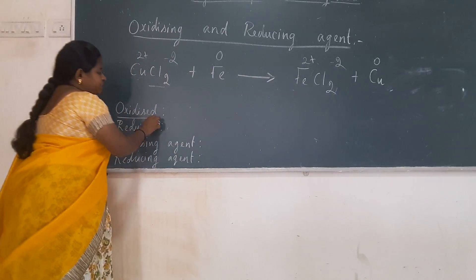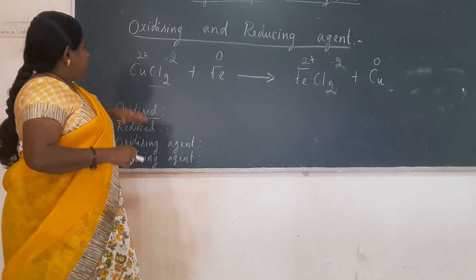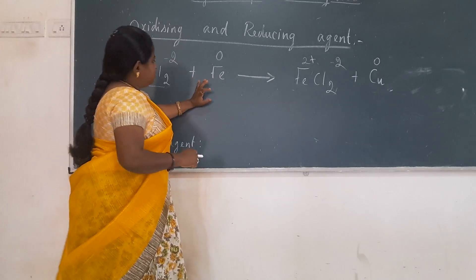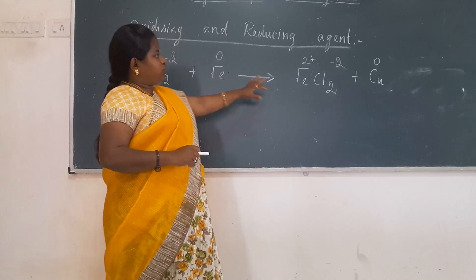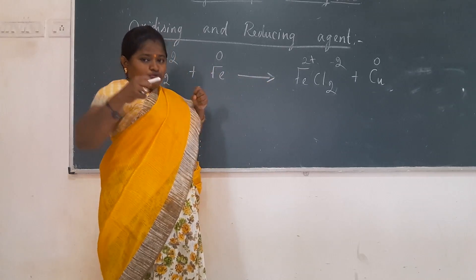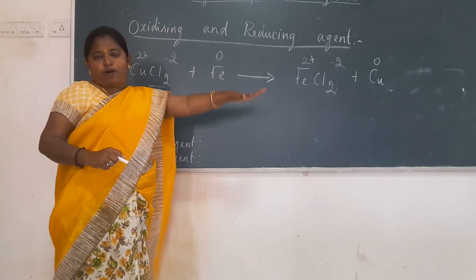And which is oxidized over here, oxidized means which loses electron. So Fe2, Fe2 plus means which loses electron. So Cu2 plus, when it gains, it becomes copper.